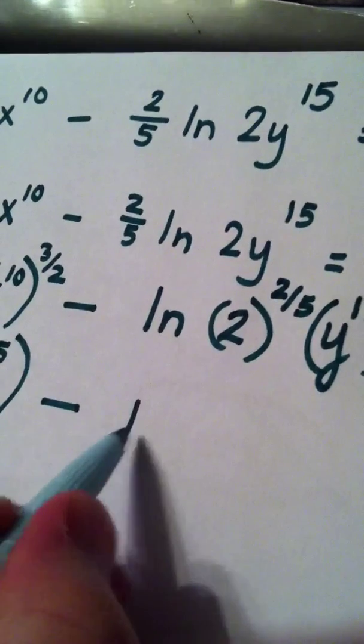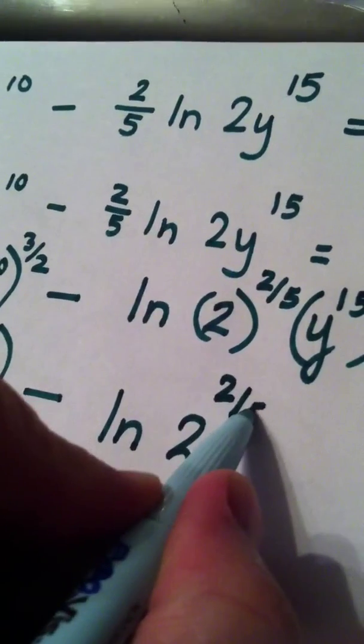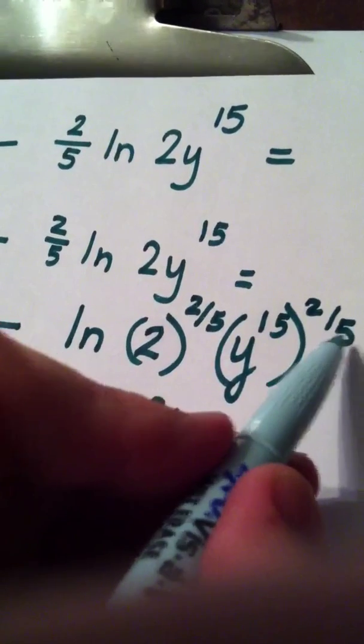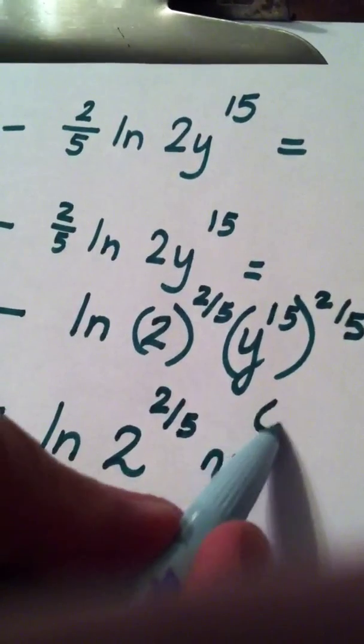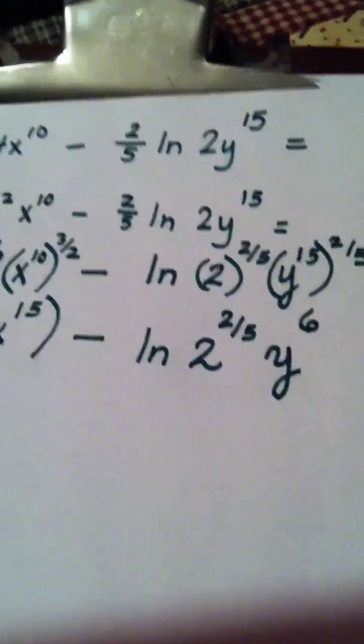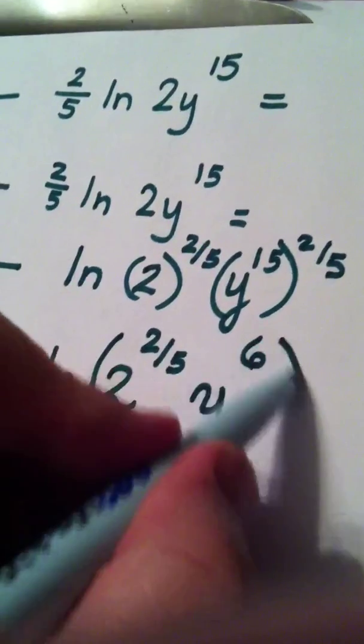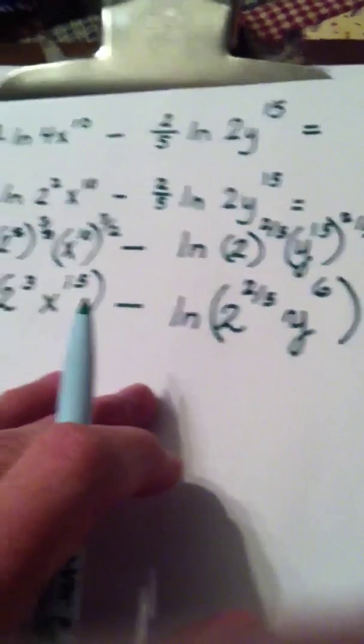So I have the natural log of 2 to the 2 fifths power and then here on the y, 5 goes into the 15 3 times, 3 times 2 is 6. So we've made this a lot prettier and we've made this a lot prettier. I mean they're not pretty, but they're prettier than they were.